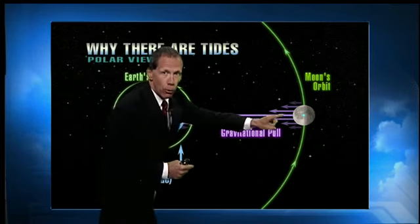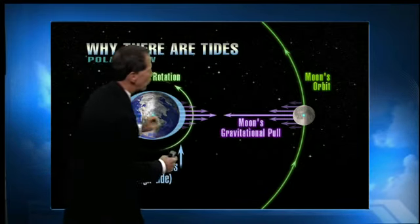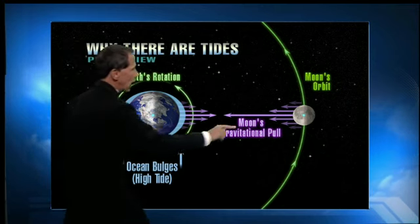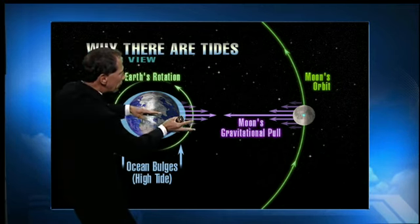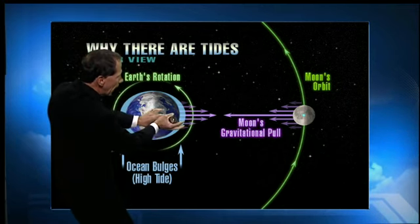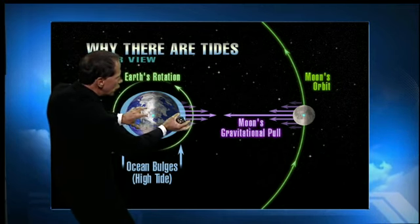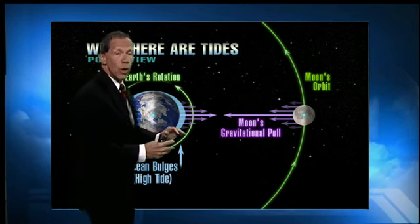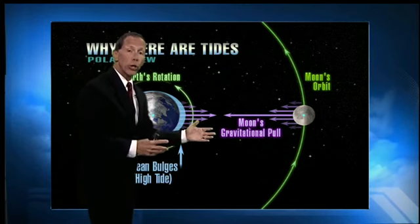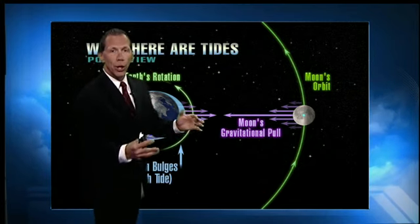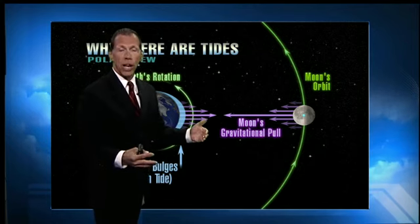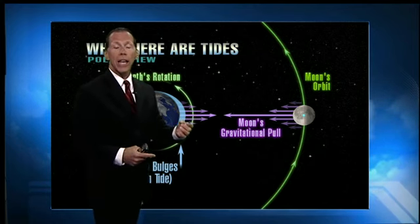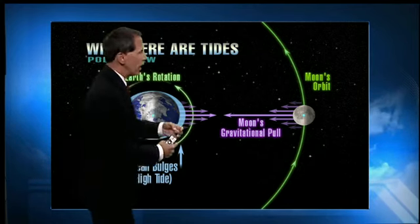A spring tide is when you've got the Moon here, the Earth here, and the Sun exactly opposite — so you have a full Moon right there. You get more of a gravitational pull pulling that ocean, so you get a bigger tide. The tides are more extreme during what we call a spring tide, once a month during the full Moon, and also during the new Moon as well.